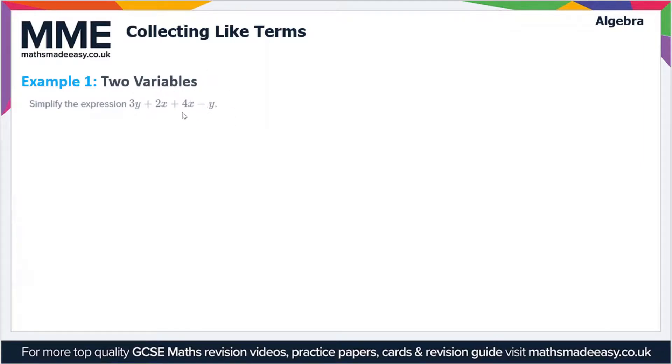So what are the like terms here? Well we have two terms in y, that's the 3y and the minus y. And we have two terms in x which is the 2x plus 4x. So I'm going to reorder the expression so we've got 3y minus y plus 2x plus 4x.